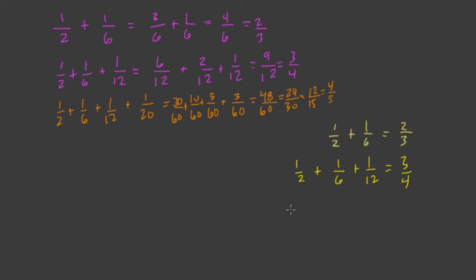So actually, we almost have a pattern that's almost easily visible. But let me go back to yellow so we can see it. One-half plus one-sixth plus one-twelfth plus one-twentieth equals four-fifths.